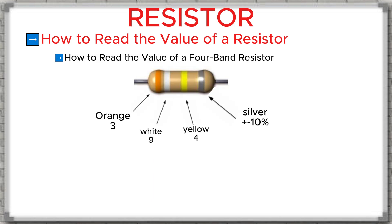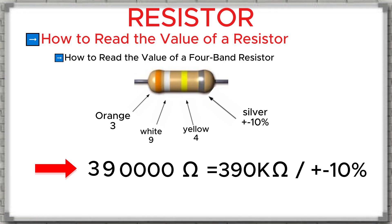Next, let's read the value of another resistor. Just like before, we start by looking at the silver band at the end to find the first band. For this resistor, band one is orange, band two is white, band three is yellow. According to the color code chart: orange means 3, white means 9, yellow means 4. Yellow is the third band, representing the number of zeros we add, so we add four zeros after the digits. As a result, this resistor has a value of 390,000 ohms, or 390 kilo-ohms, with a tolerance of ±10%.